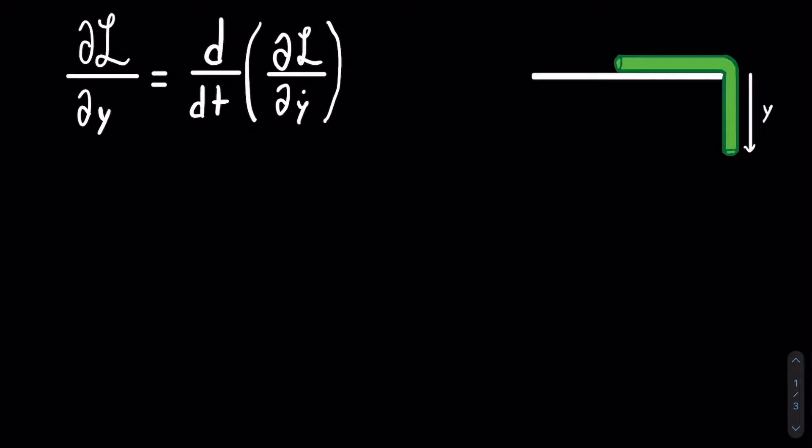We will be using Lagrangian mechanics to find the equation of motion for a rope of constant linear mass density falling off a table, as seen in the diagram on the right. I will be using the distance from the table to the lowest point on the rope as the generalized coordinate.